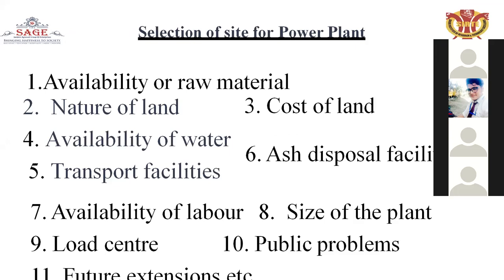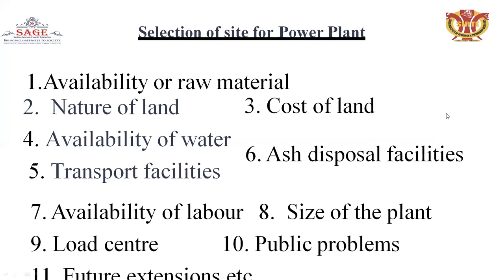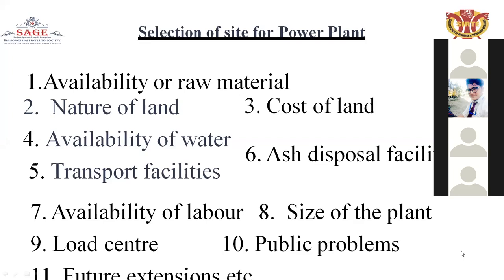For the selection of site for a power plant: first is the availability of raw material — you should check about that. Second is the nature of land and cost of land, which is an important factor. Third is the availability of water or any other source to generate electricity. Fifth is transport facilities — you have to transfer fuel. Sixth is ash disposal facilities. Seventh is the availability of labor and the size of the plant.